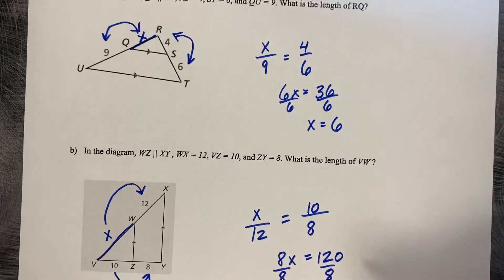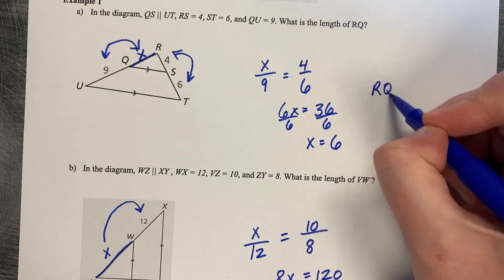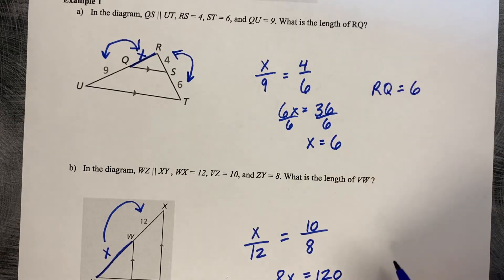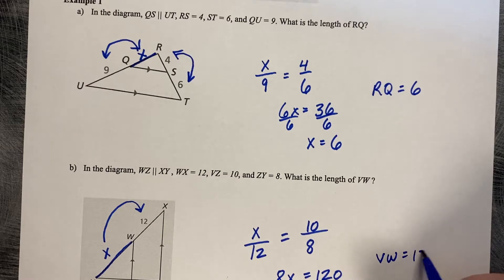I should actually come back up here and finish this one too. So we're going to say that RQ is 6 and VW is 15.